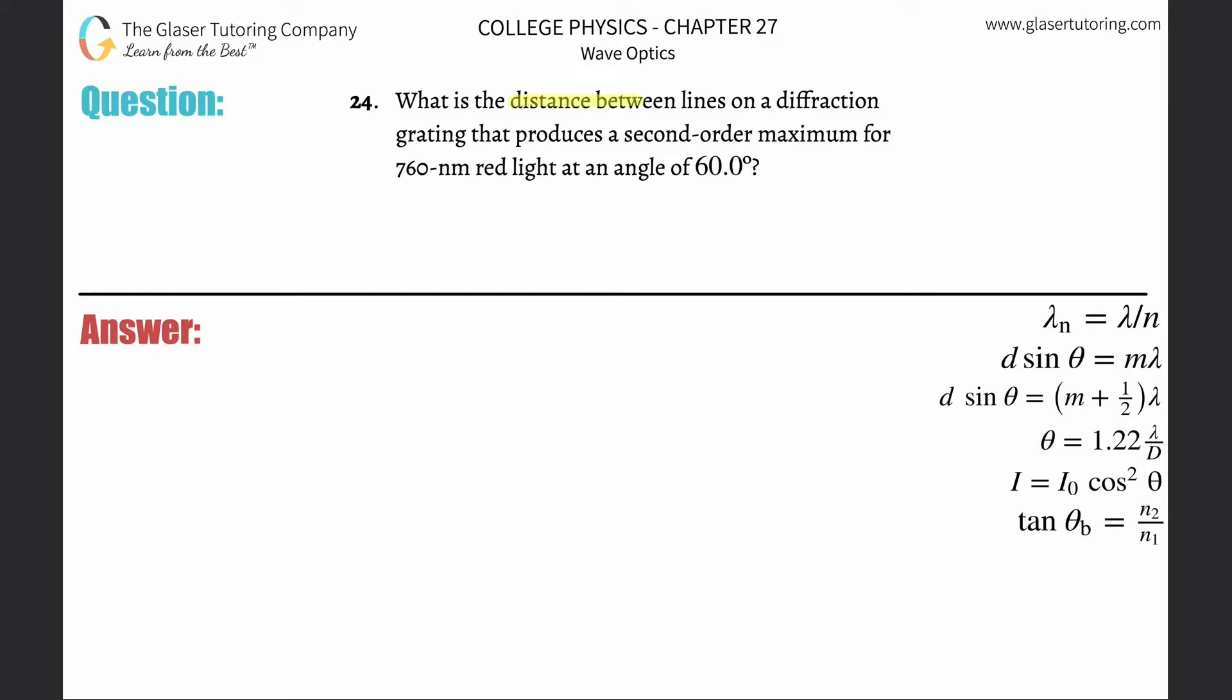Number 24, what is the distance between lines on a diffraction grating that produces a second order maximum for 760 nanometer red light at an angle of 60 degrees?